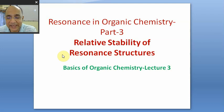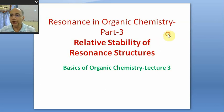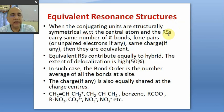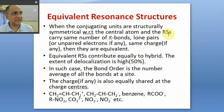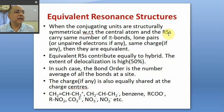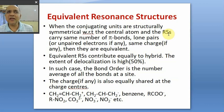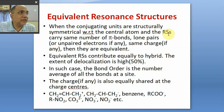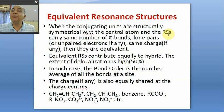The relative stabilities and hence contributions can be understood by dividing into two categories. The first category is equivalent resonance structures — such cases are very limited in organic chemistry. If the resonance structures are equivalent, their contributions are also equivalent, either divided by two or three depending on the number of contributing structures.